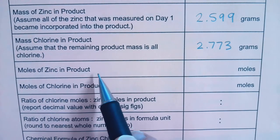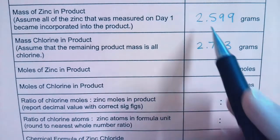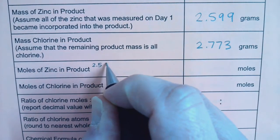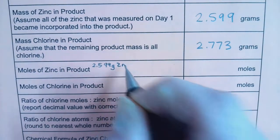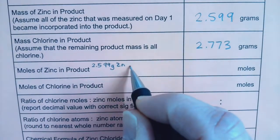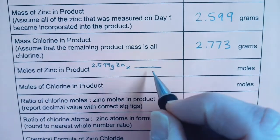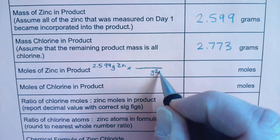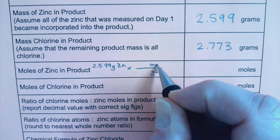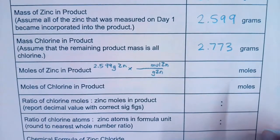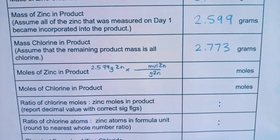So for my moles of zinc, I'm going to take my mass of zinc. I'm going to multiply by a conversion factor that will cancel grams of zinc and end up in moles of zinc. To do that, I need to go to the periodic table and look up the molar mass.